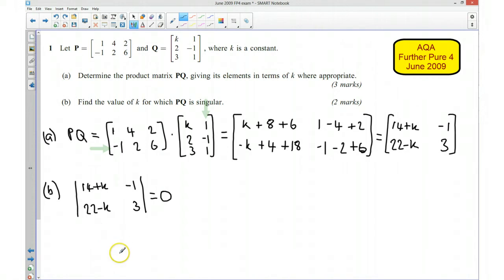Okay, so what we want to do then is when I multiply that by that and I take away the product of that and that, I want that to be equal to 0. So I've got 3 times 14 plus k, and I take away negative 1 times by 22 take away k. So if I take away the negative 1 that's going to make it a plus, so I'm going to plus 1 times by 22 take away k. And in order for this to be singular, then this needs to be true and this needs to be equal to 0.